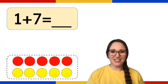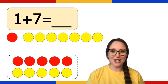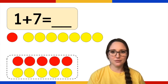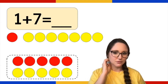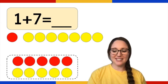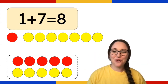One plus seven. Here's a picture — remember to write your number sentence and write the answer. One plus seven is eight. Great job.